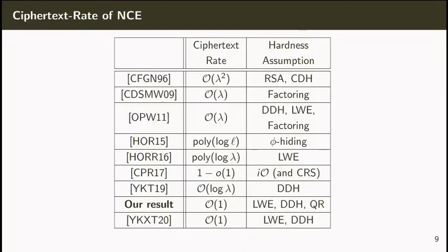Our result improves upon a long line of works on the ciphertext rate of NCE. This line of work had stalled at polylogarithmic rate from assumptions such as LWE or DDH. I'd like to mention that we can build RATE1 NCE in the CRS model if we consider the non-standard assumption of IO. Interestingly, in a concurrent work accepted at this year's Asia Crypt, Yamada et al. proved an identical result to ours, however using completely different techniques.